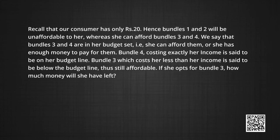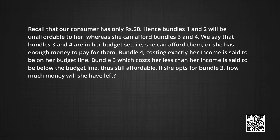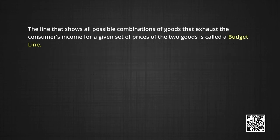Recall that our consumer has only 20 rupees. Hence, bundles 1 and 2 are not affordable to her, whereas she can afford bundles 3 and 4. Bundle 4 costs exactly her income and is said to be on her budget line. Bundle 3, which costs less than her income, is below her budget line but is still affordable — she has rupees 7 left over. The budget line shows all possible combinations of goods that exhaust the consumer's income for a given set of prices.